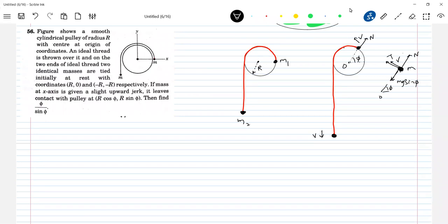And what is the condition to leave circular path? n should be 0. So write down the equation. So mg sin phi minus n equal to mv square by r. To leave circular path, n must be less than or equal to 0. I'm just writing equal to that one. So this will be v square equal to g r by sin phi.